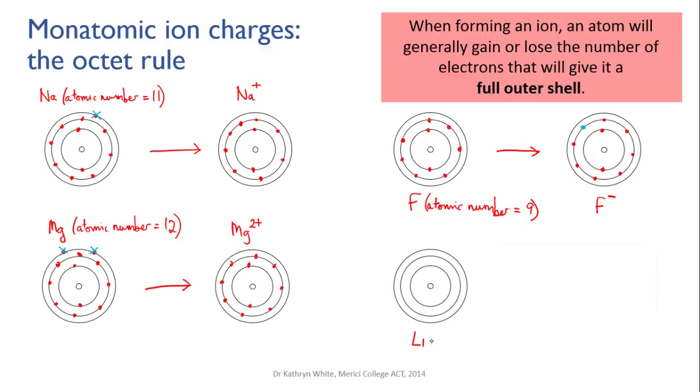One final example. Lithium is element number three. It has three electrons and three protons. It can either lose one electron or gain seven to get a full outer shell. Losing one is the easiest option, so it does that. But that leaves it with only two electrons, and this is called the octet rule.